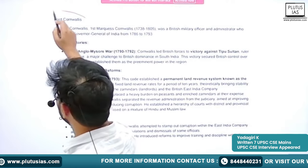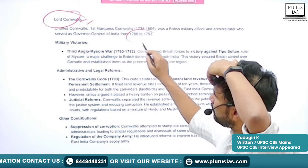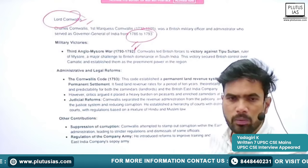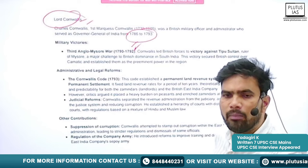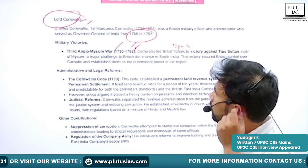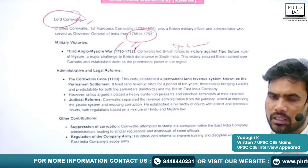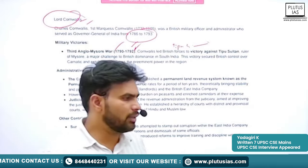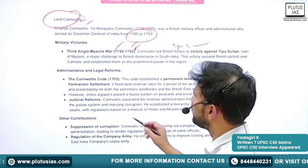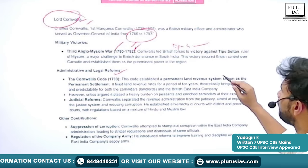Next is Lord Cornwallis — one of the prominent Governors General of Bengal. He was Governor General from 1786 to 1793. He was involved in the Anglo-Mysore wars. Because of his tactics and military acumen, he was able to engage Tipu Sultan in the third Anglo-Mysore war. They came to a settlement, and Lord Cornwallis played an important role. He also introduced the Cornwallis Code in 1793 — a permanent land revenue system known as the Permanent Settlement.